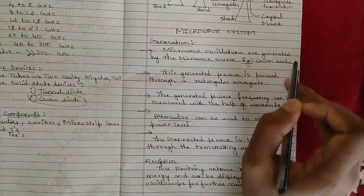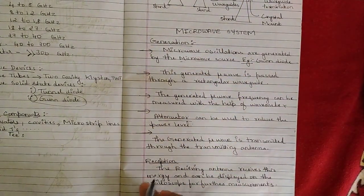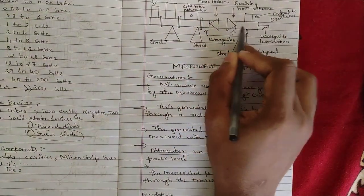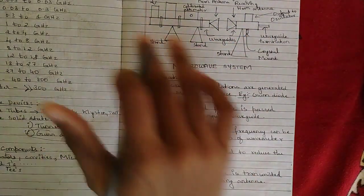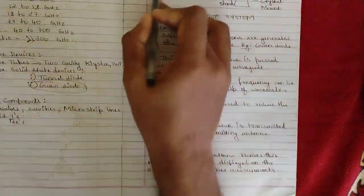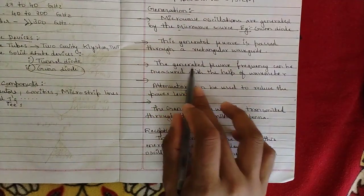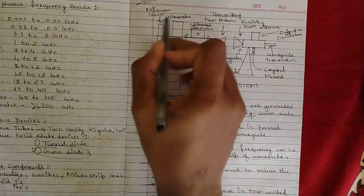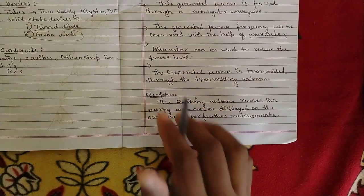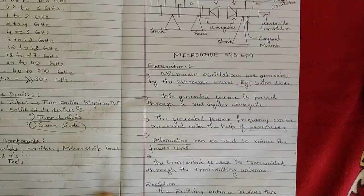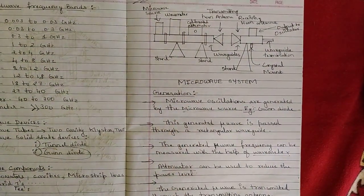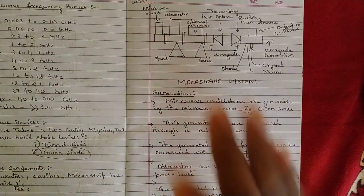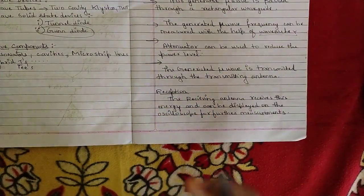The generated microwave passes through a rectangular wave guide and is transmitted through horn antennas. Microwave frequency can be measured with the wave meter. The attenuator reduces power level to block unwanted signals and pass only required ones. After passing through the wave meter and attenuator, the microwave is transmitted through the transmitting horn antenna.